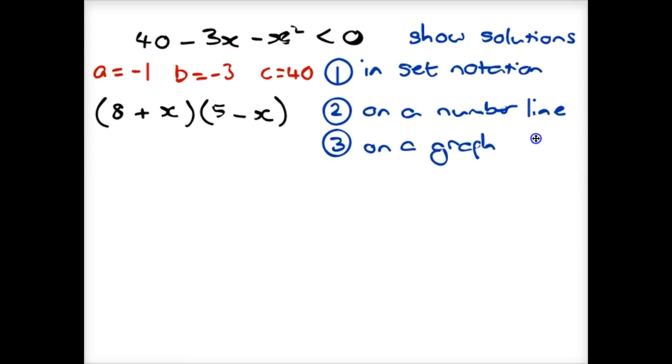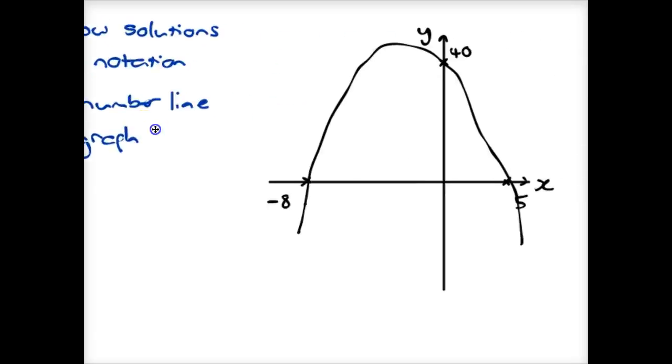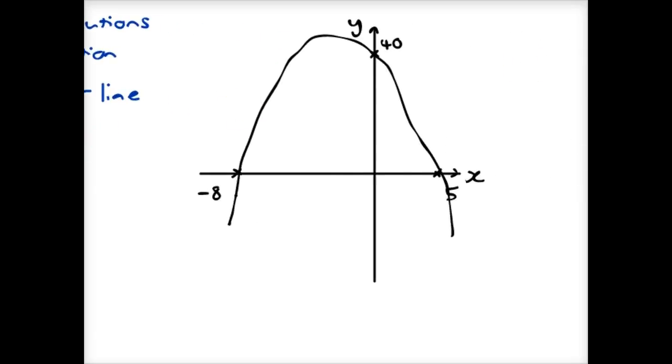We're looking for where that is less than 0. And the places where it's less than 0 are where it's below the x-axis. So that's here and here.